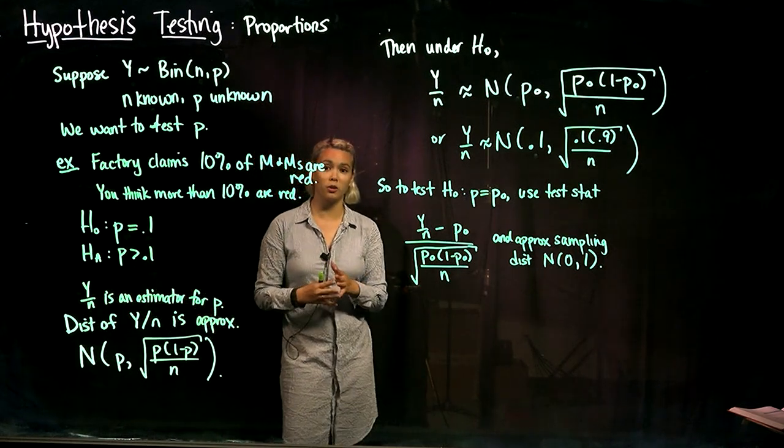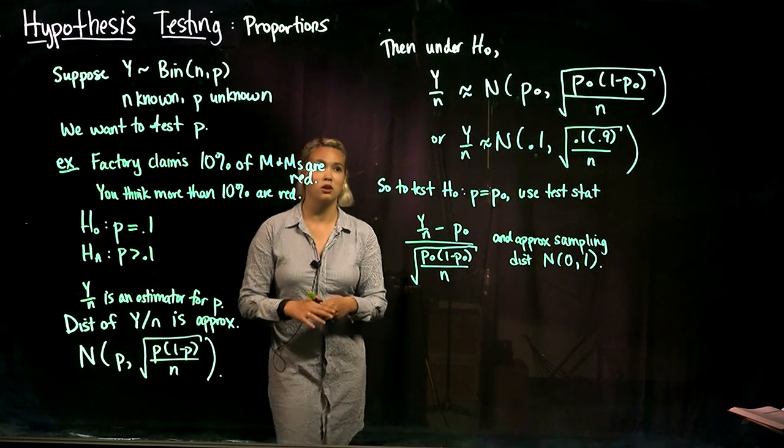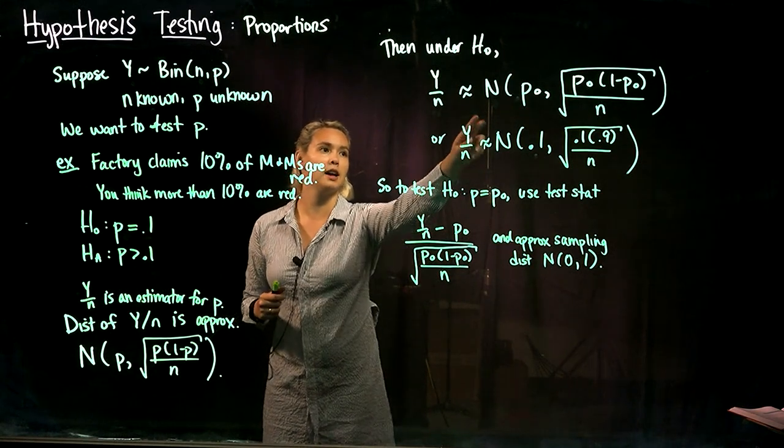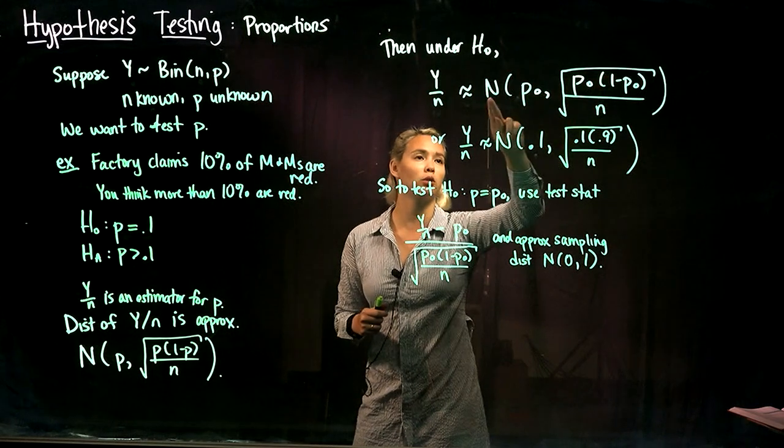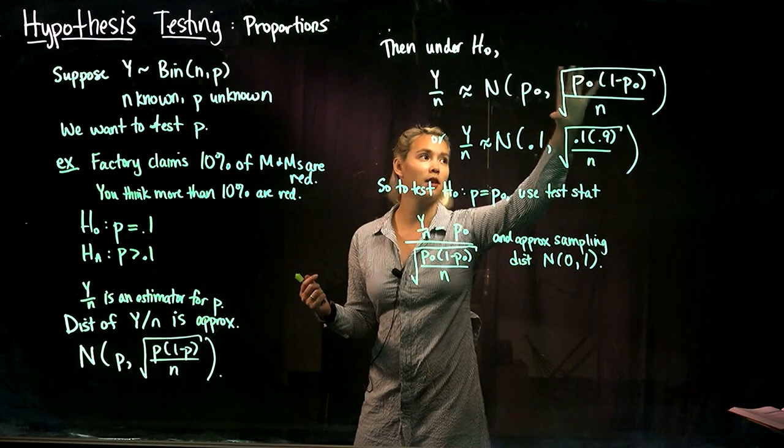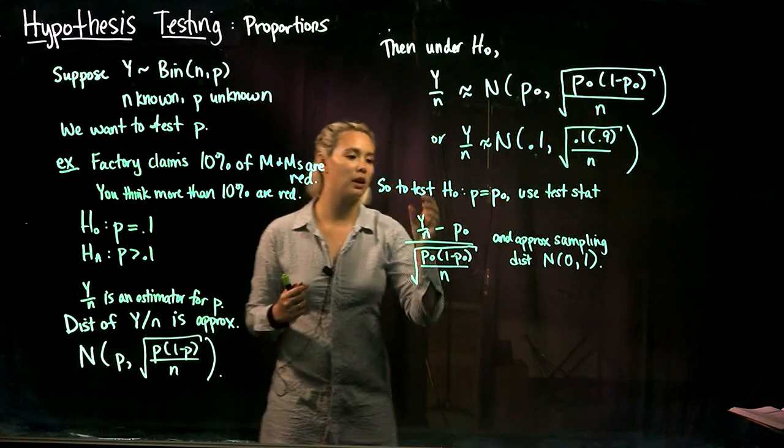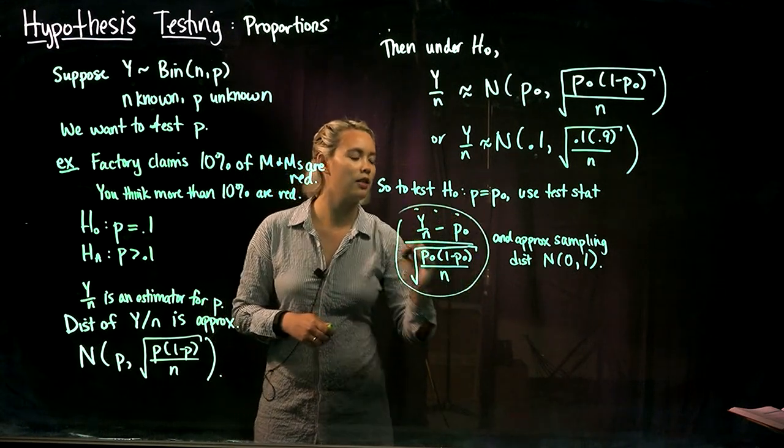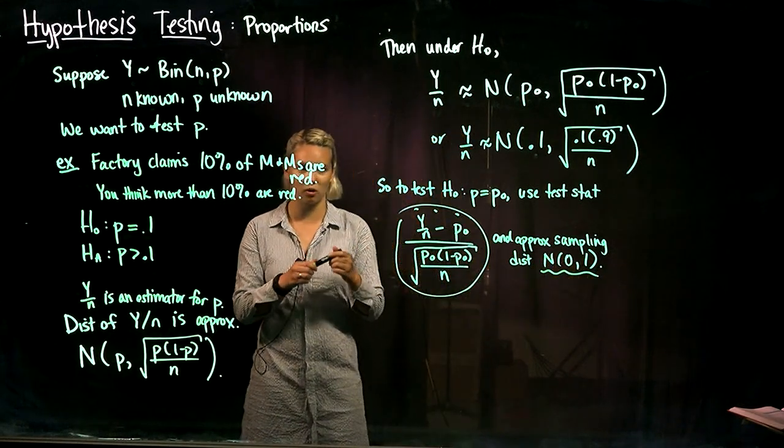In summary, if you're looking to test one proportion, we're going to use the estimator Y over n, and we know that Y over n has approximately this distribution under the null hypothesis: normal mean p-naught, which is the value of p under the null hypothesis, and the standard error under the null hypothesis. So here's our test statistic, and we know that under the null hypothesis it's going to have a distribution that's standard normal.